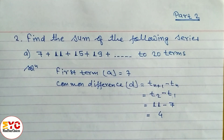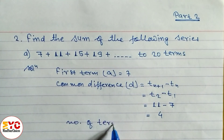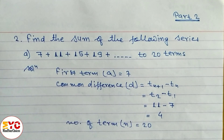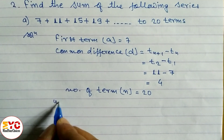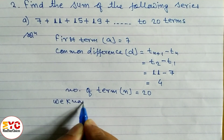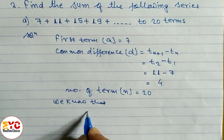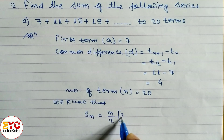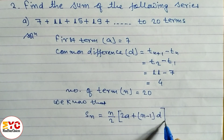Number of terms is equal to 20. Now we have to use the sum formula. We know we have two formulas, so which formula do we use? S_n equals n/2 times (2a plus (n−1)d). I will show you why to use this formula and not the other one.